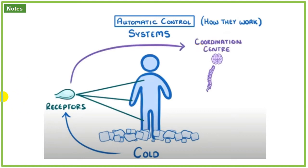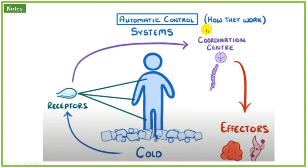A message is sent towards the coordination center — the brain and spinal cord. The message informs that a change has been detected in the environment. The coordination center then generates one more message, which is sent to the effectors.